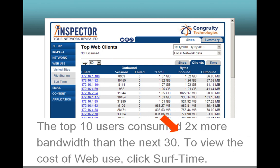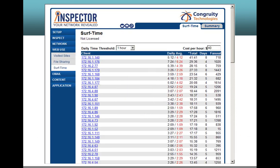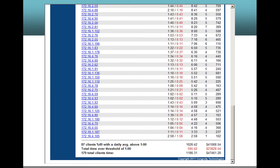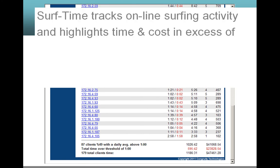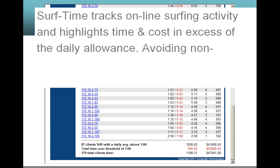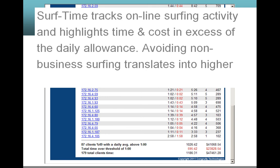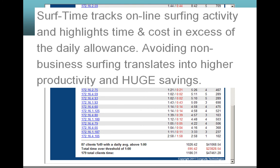The top 10 users consumed twice more bandwidth than the next 30. To view the cost of web use, click Surf Time. Surf Time tracks online surfing activity and highlights time and cost in excess of the daily allowance. Avoiding non-business surfing translates into higher productivity and huge savings.